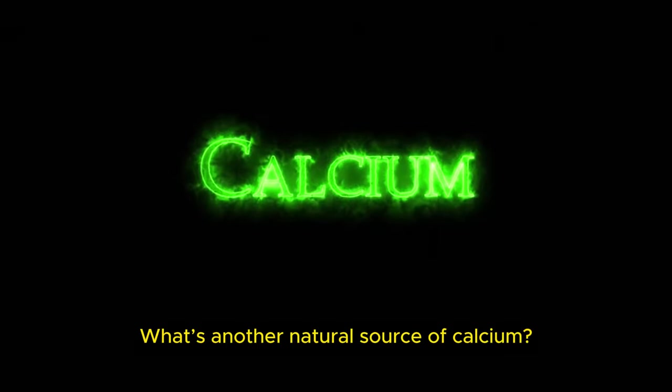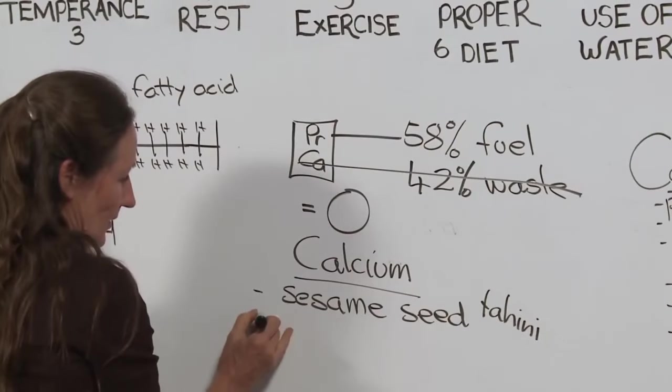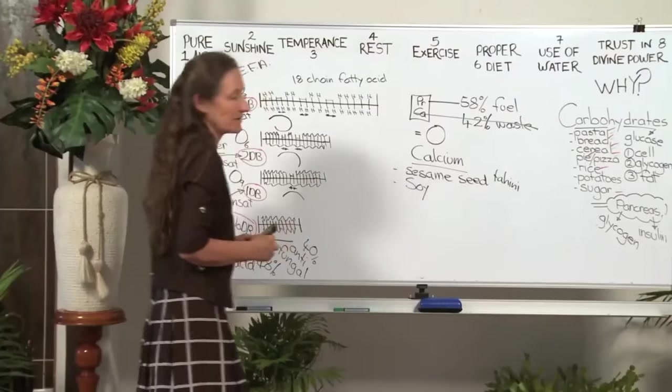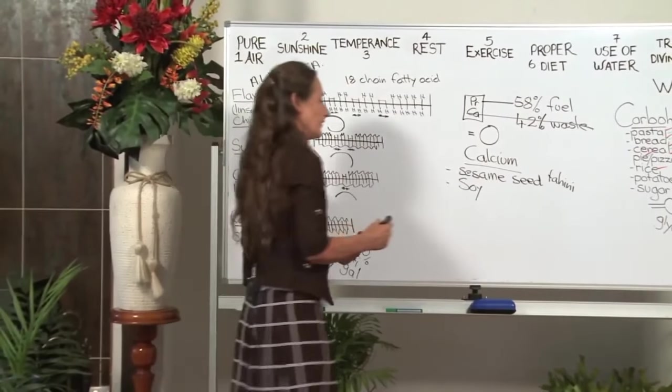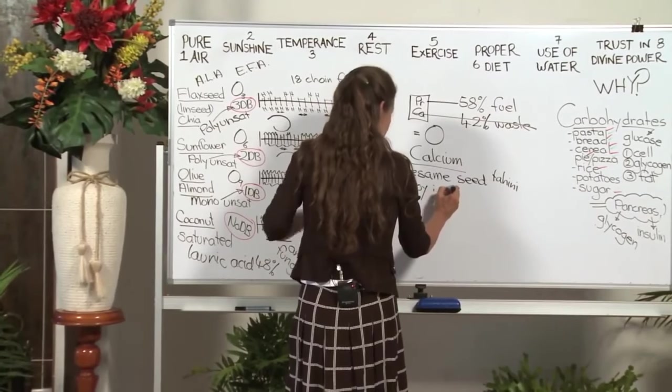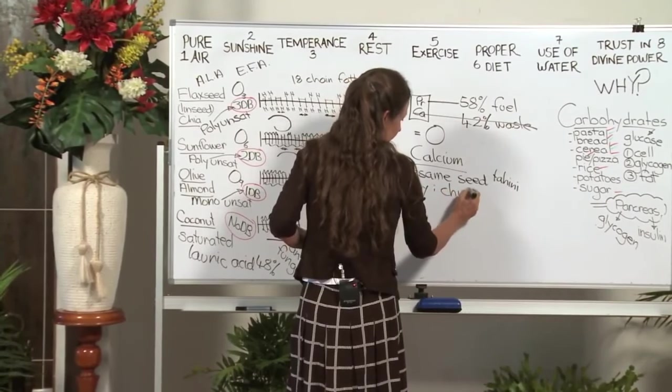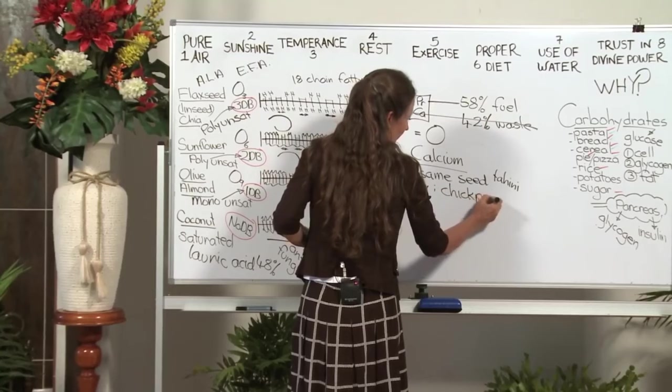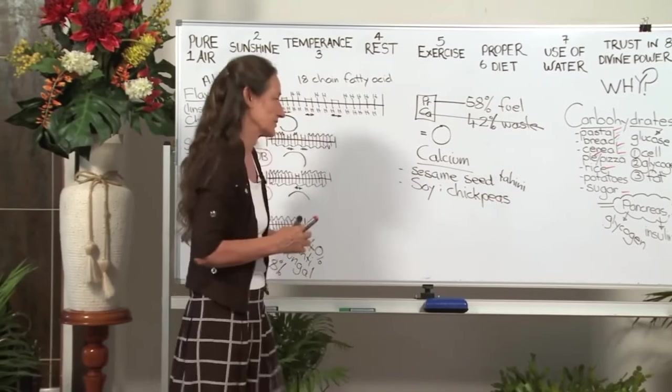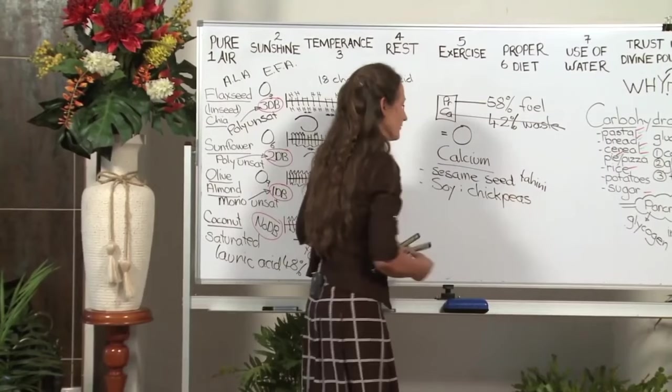What's another natural source of calcium? Also soy, and again the soy must be organically grown, non-genetically modified, and the other legume is chickpeas. And that's why your hummus is such an excellent form of calcium because it's a combination of your chickpeas and your tahini.